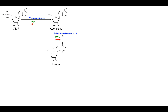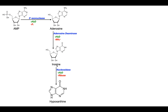Then adenosine deaminase uses water and essentially hydrolyzes off this amine, which leaves as ammonia or the ammonium ion, and replaces it with a carbonyl — that oxygen is from the water. This molecule is called inosine. Then the enzyme nucleosidase hydrolyzes off the ribose, this 5-carbon sugar, and leaves just the nitrogenous base, which is hypoxanthine.